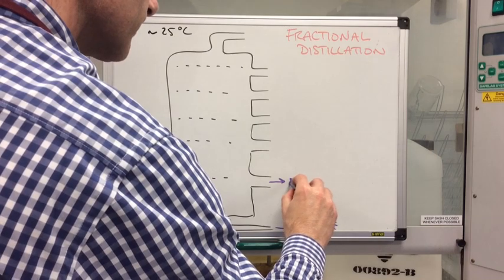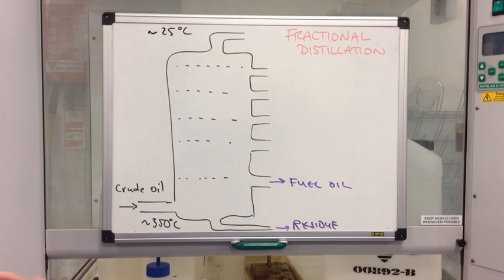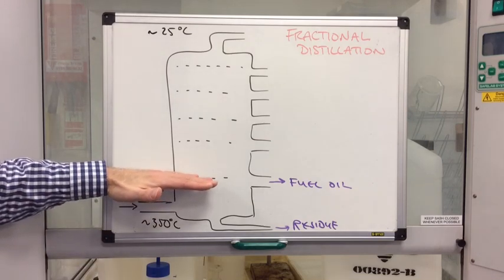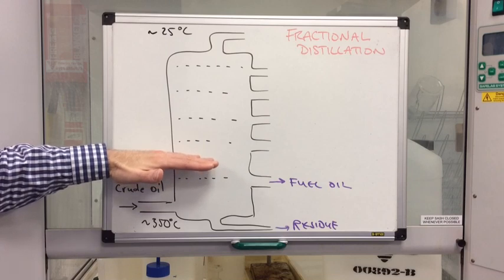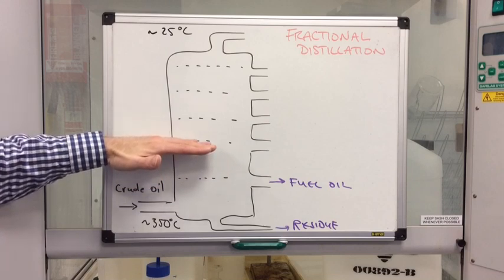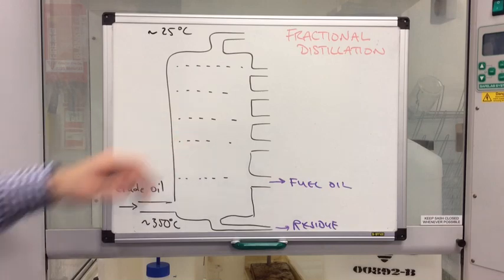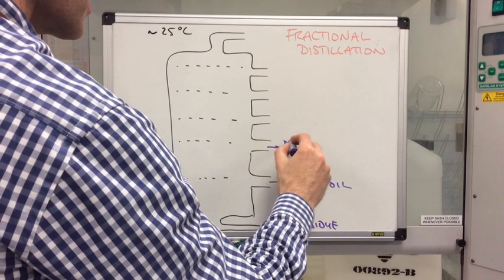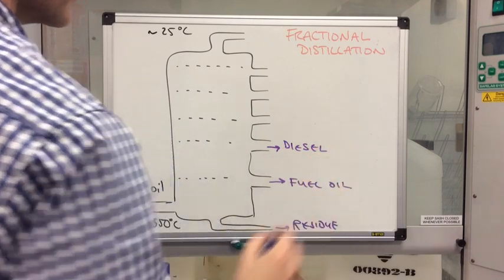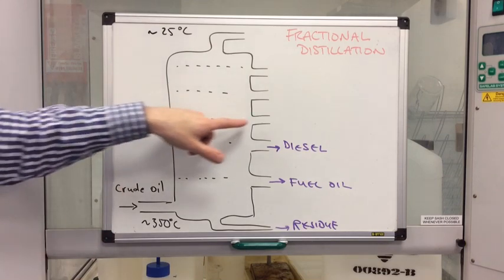So we've got fewer hydrocarbons now, so they rise because they're still gaseous at this point. And then the next set of hydrocarbons would start to condense here because they've reached their boiling point, they've reached a degree below the boiling point if you like, and they would run out at this point. And this is known as the diesel fraction.